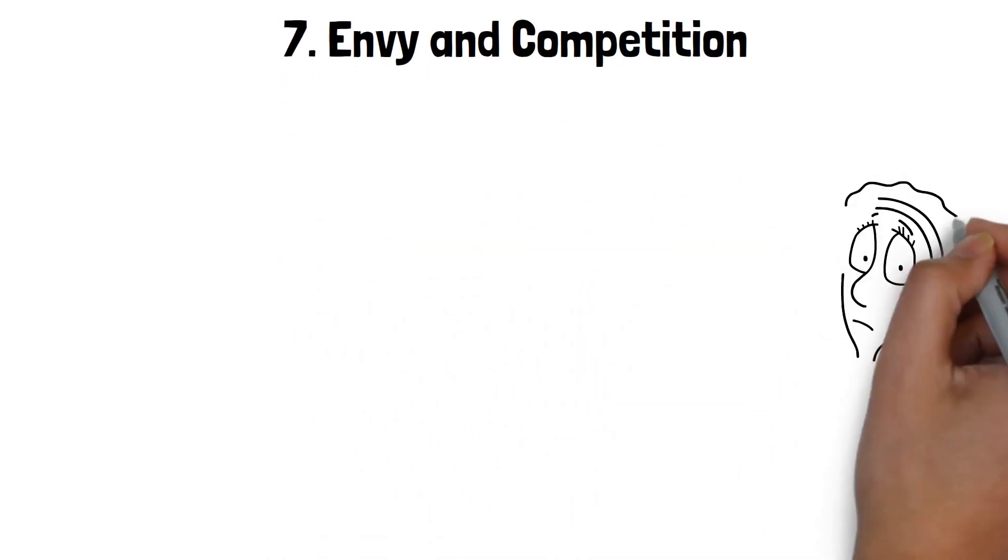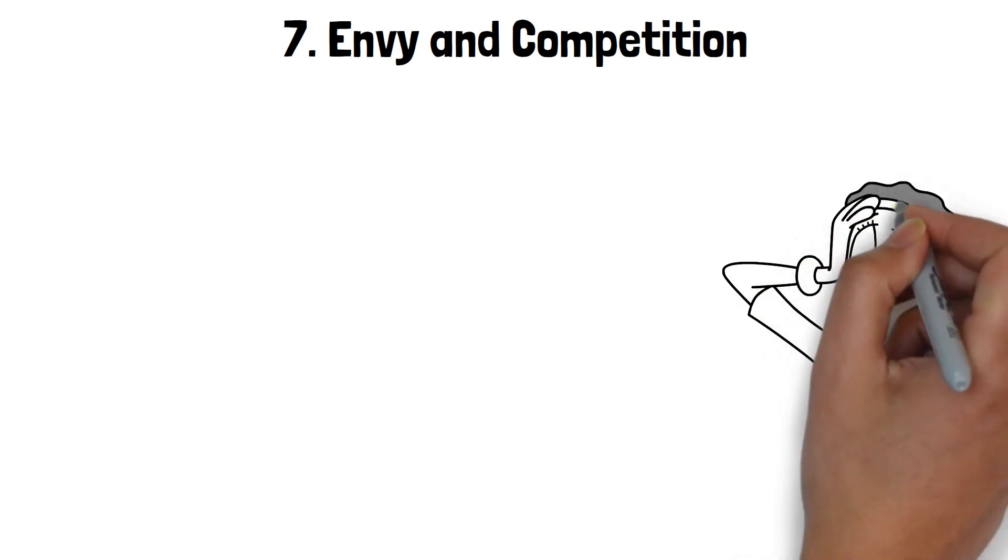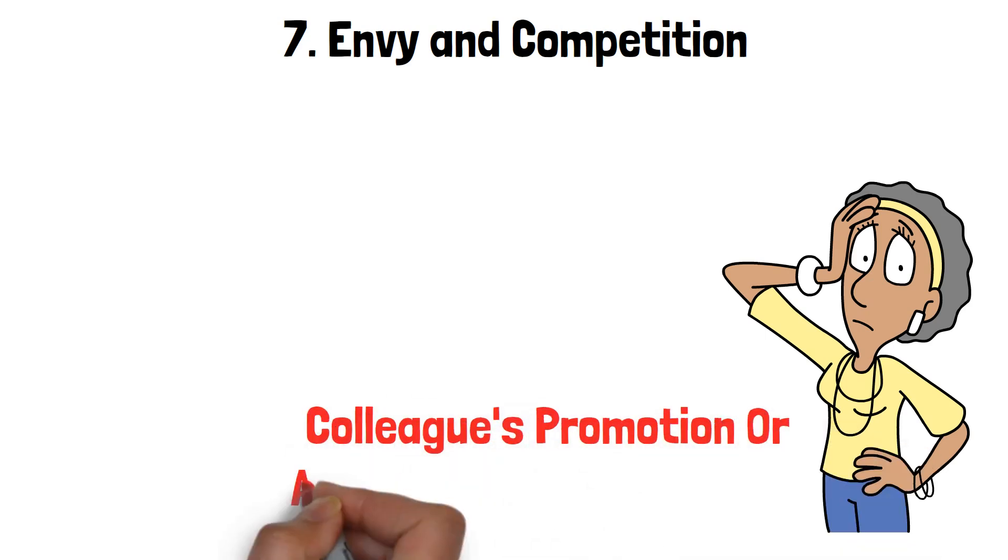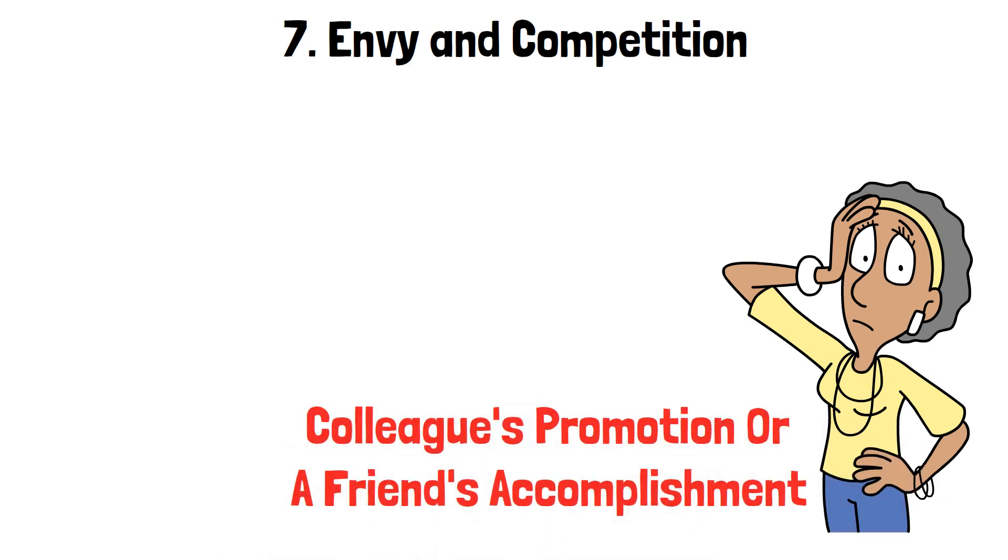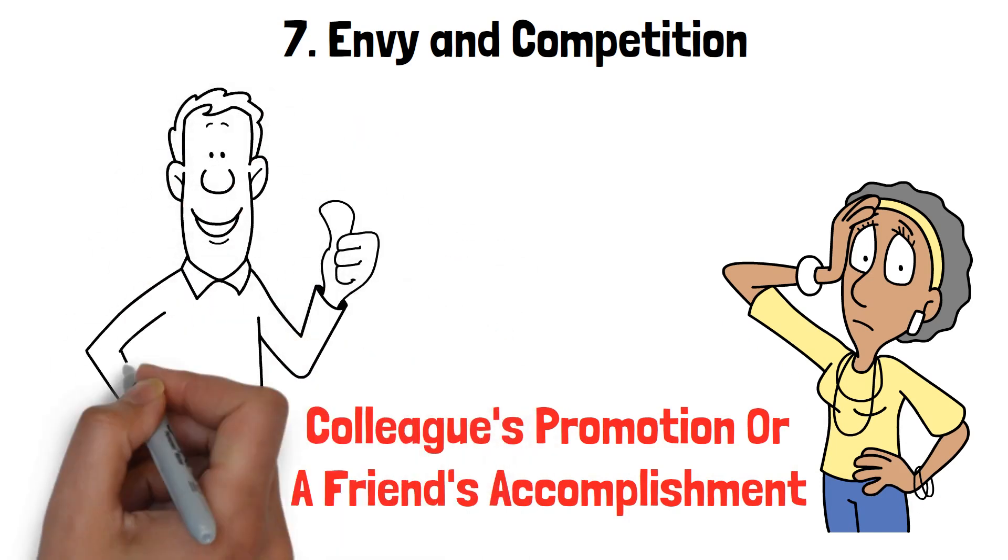7. Envy and Competition. It's like living in a constant game of one-upmanship. A narcissistic wife often can't stand the thought of someone else shining in the spotlight. Whether it's a colleague's promotion or a friend's accomplishment, she's quick to feel a pang of envy.